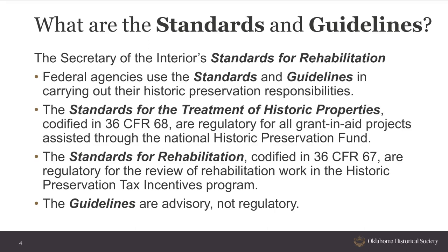Federal agencies use the standards and guidelines in carrying out their historic preservation responsibilities. State and local officials use them in reviewing both federal and non-federal rehabilitation proposals, including Section 106 projects. Historic district and planning commissions across the country use the standards and guidelines to guide their design review processes. The standards for the treatment of historic properties, codified in 36 CFR 68, are regulatory for all grants-in-aid projects assisted through the National Historic Preservation Fund. The standards for rehabilitation, codified in 36 CFR 67, are regulatory for the review of rehabilitation work in the Historic Preservation Tax Incentives Program. The guidelines are advisatory, not regulatory.